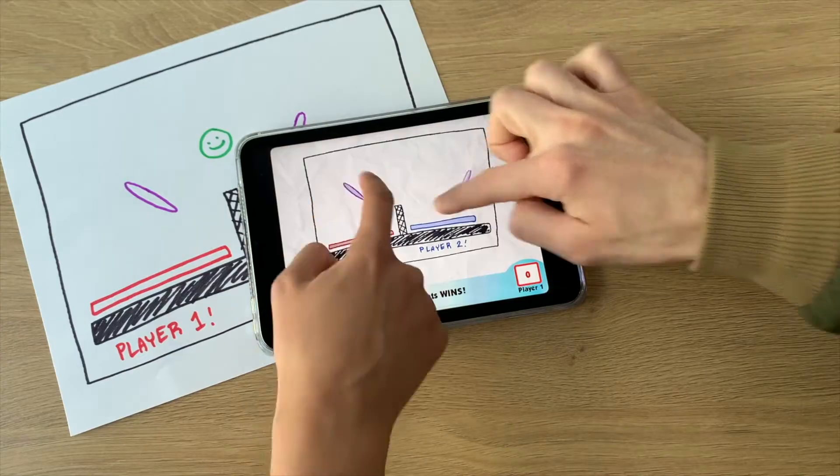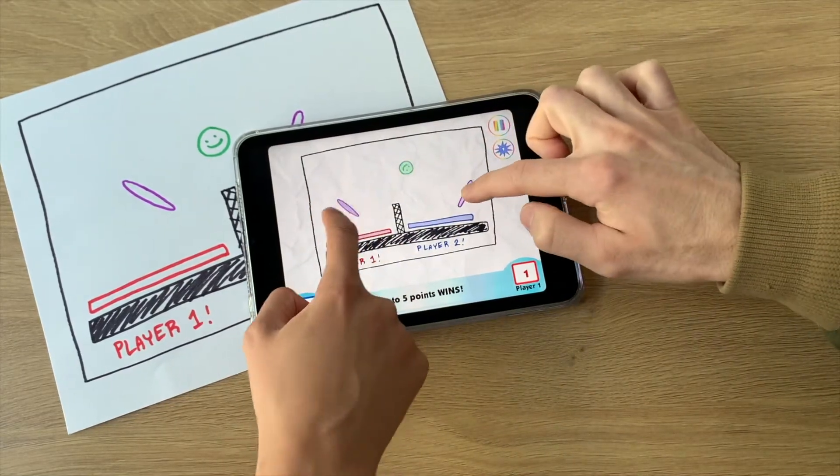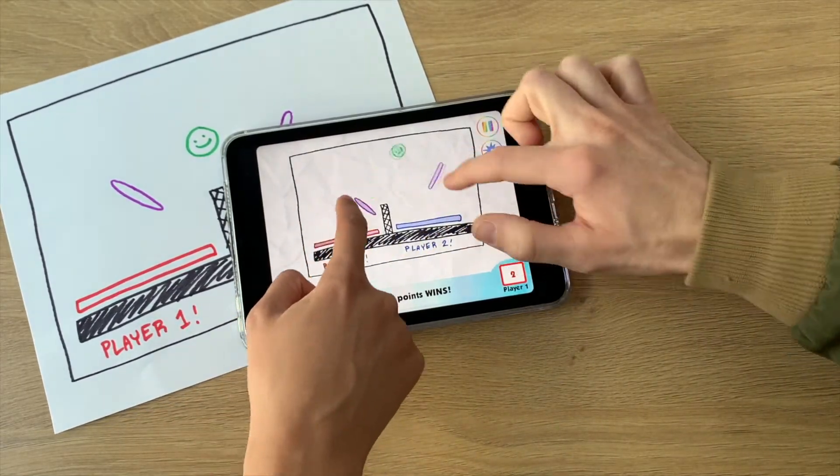With Volley Versus, you can create a tennis or ping pong style game that you can play against friends and family. First, you will need to draw your game.